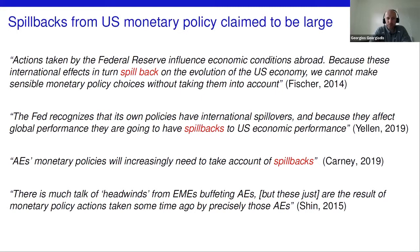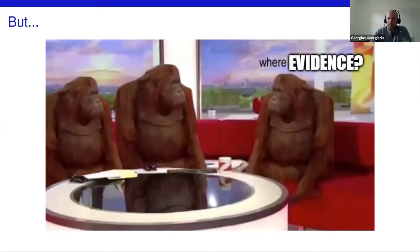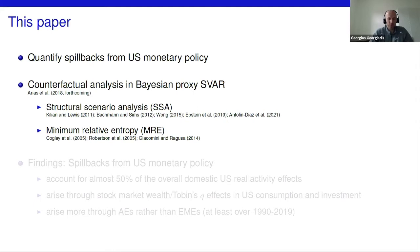Fisher noted that because these international effects spill back on the U.S. economy, the Fed cannot make sensible monetary policy choices without taking them into account. Janet Yellen in 2019 explicitly mentioned that spillbacks are large, as did Mark Carney at the Jackson Hole meetings in 2019, extending the argument to advanced economy monetary policies more generally. Hyun Song Shin in 2015 at a Fed conference also had the same notion in mind.